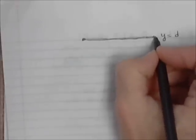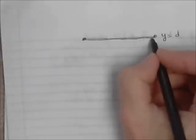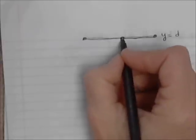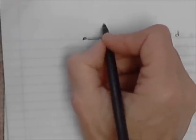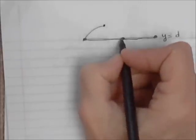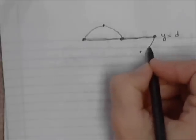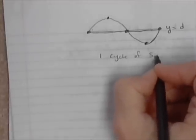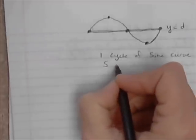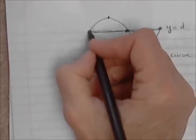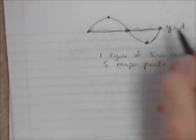There are five major points in a sine curve. I put the first and last point in first, then divide it up equally — smack dab in the middle, halfway, halfway. Halfway between the two outer points is the maximum point on the sine curve, so I go up and create a hill for the first half, and then create the little valley for the second half. The five major points are: midline, maximum, midline, minimum, and midline.